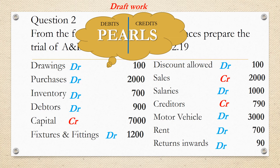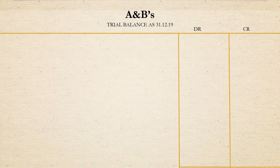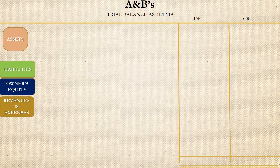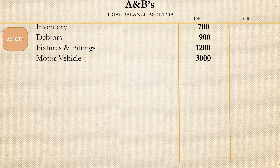The next step is to put the balances in the trial balance. These balances are not placed at random. They have to be grouped into assets, liabilities, owners' equity, revenues and expenses in that order. The assets are inventory, debtors, fixtures and fittings and motor vehicle, and they all have debit balances.